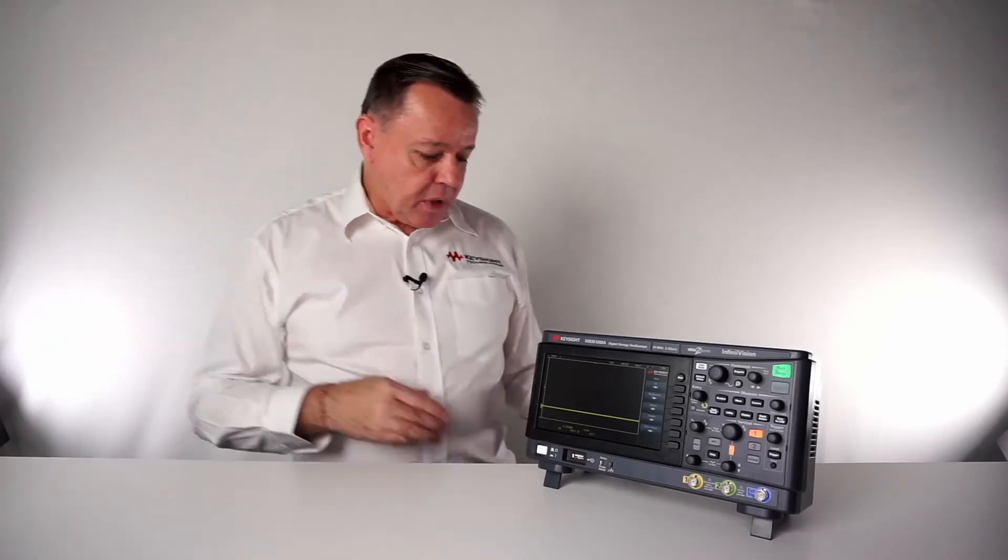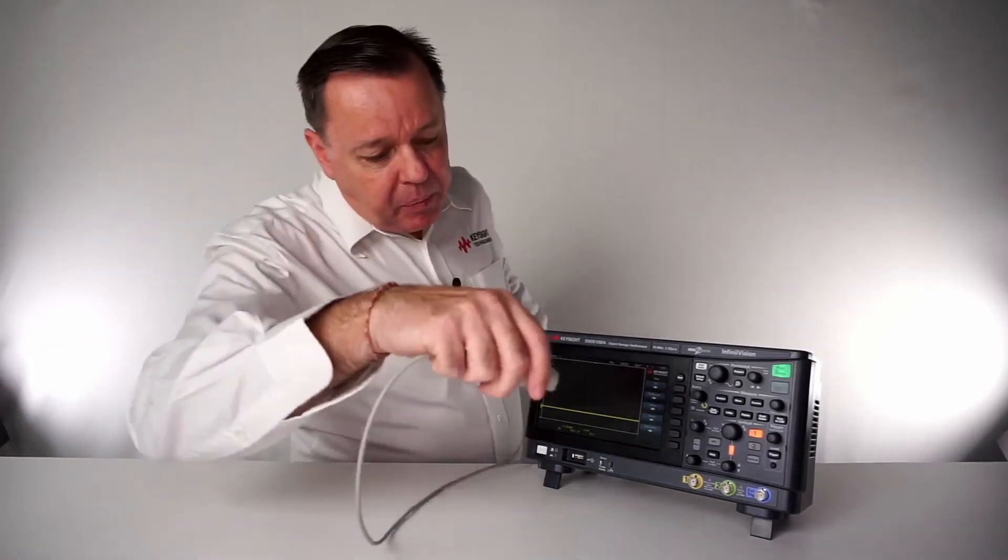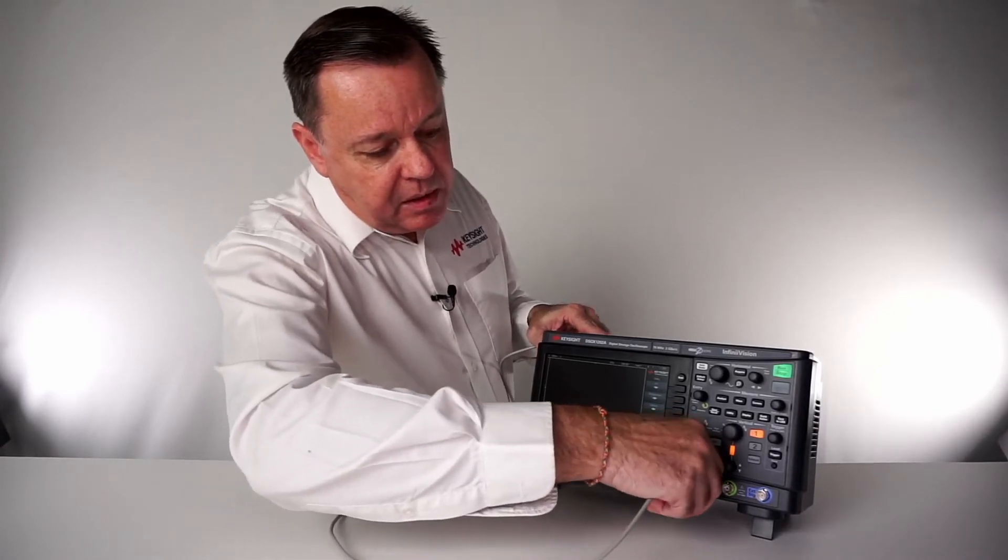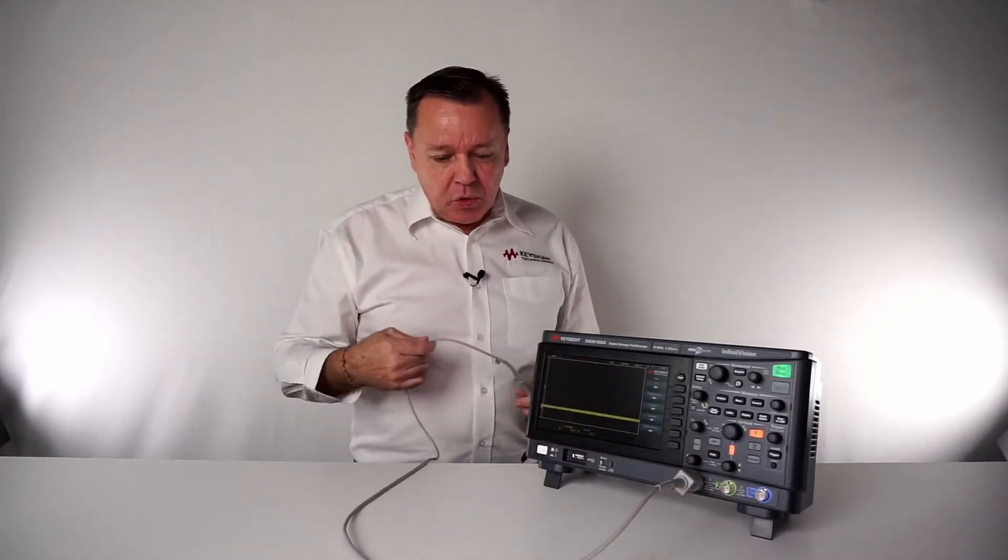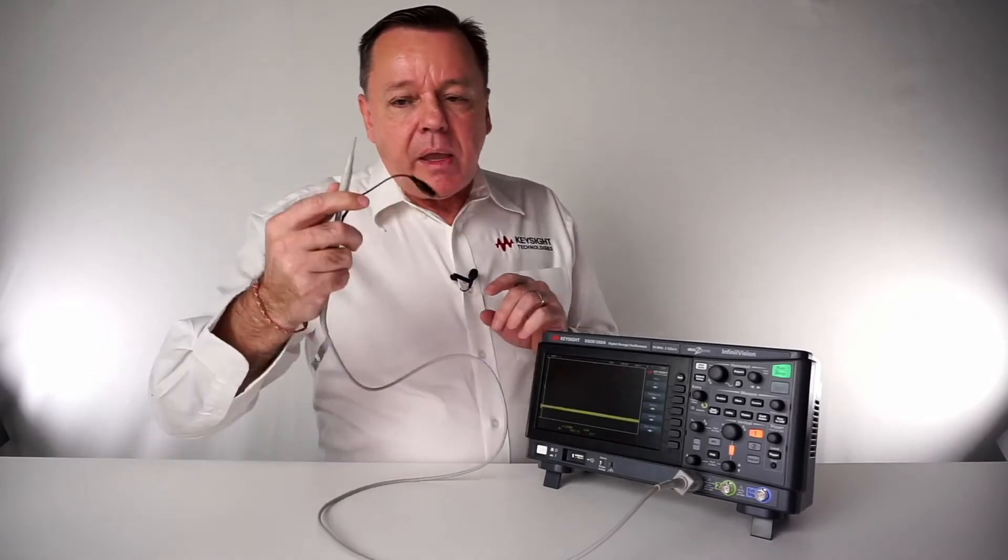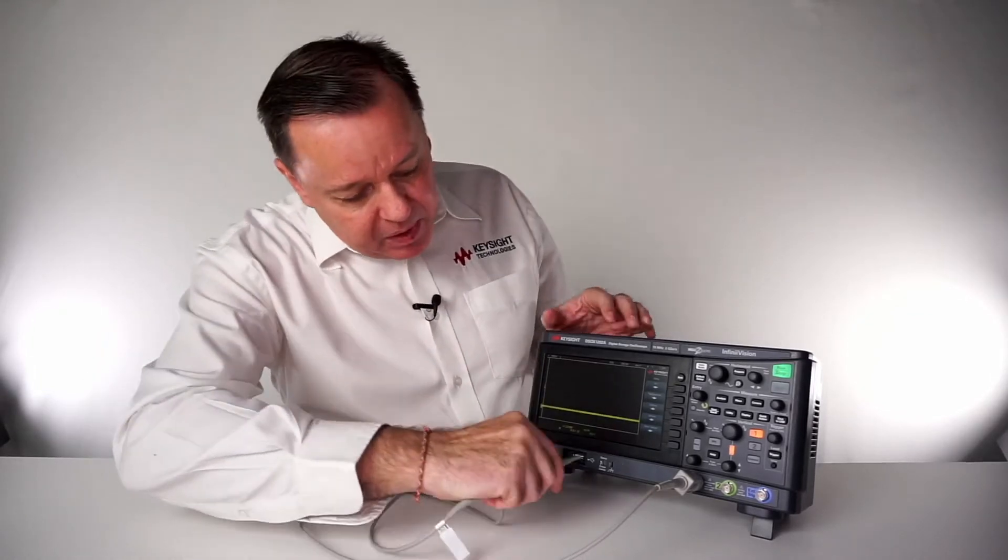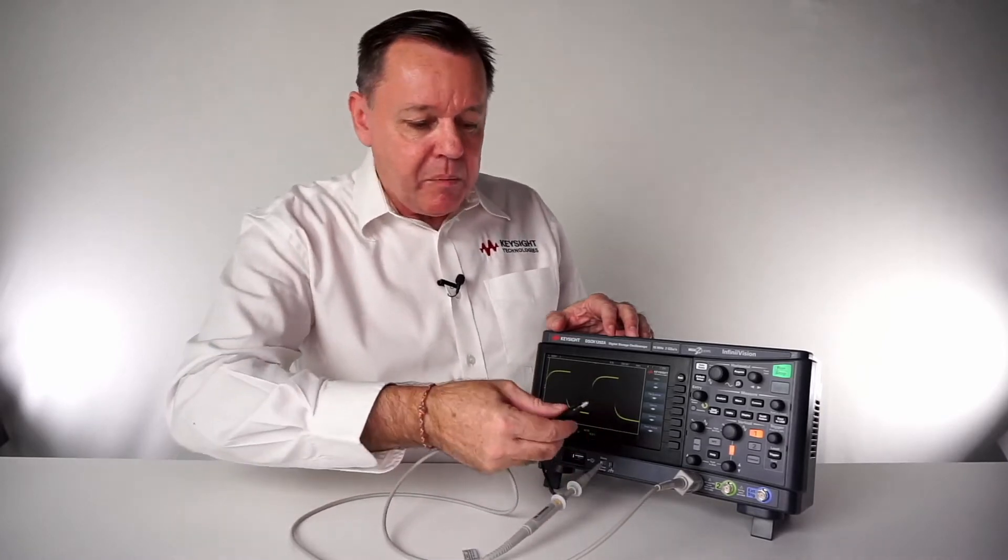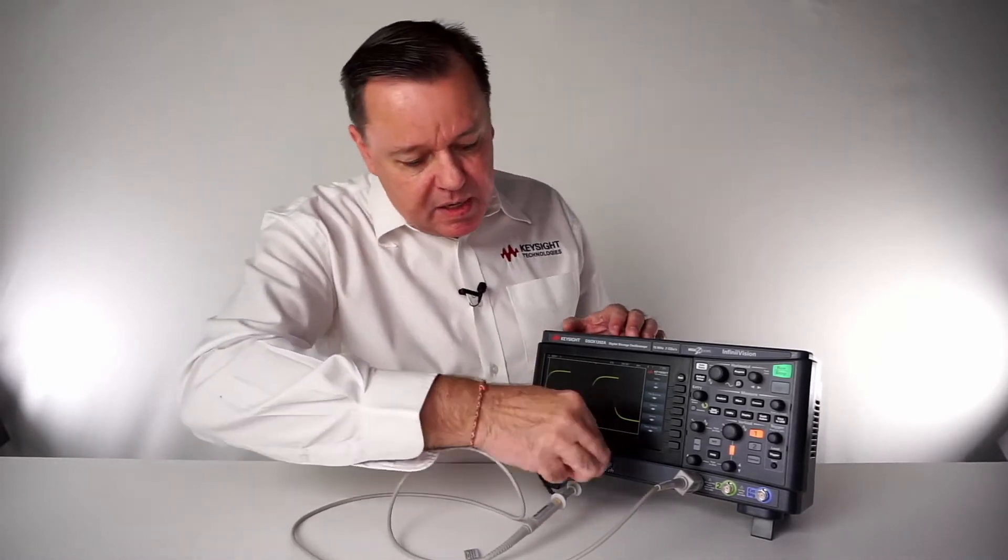How to do that? We plug in the oscilloscope in the channel that we want to use and put the probe tip in the compensation output of the oscilloscope. Very important is also to connect the ground lead.